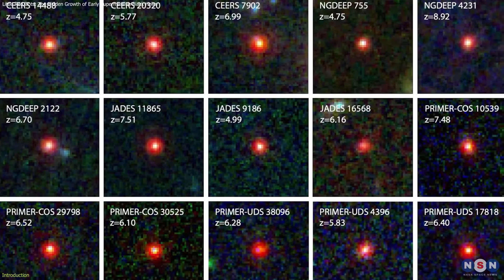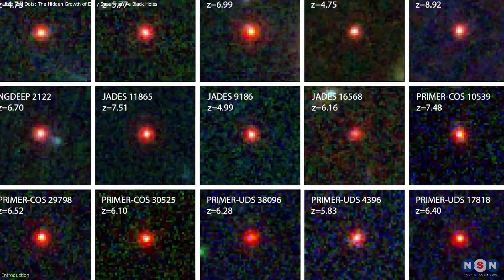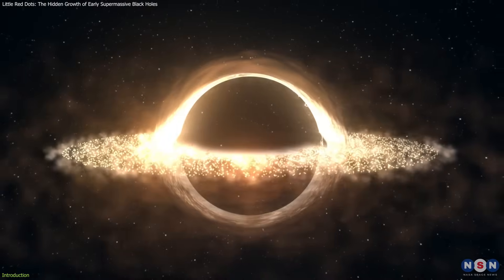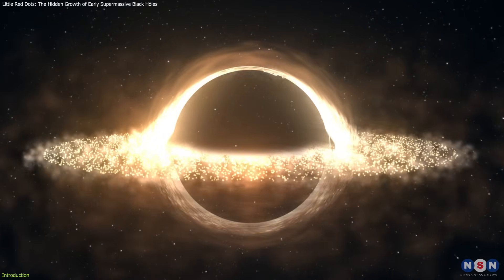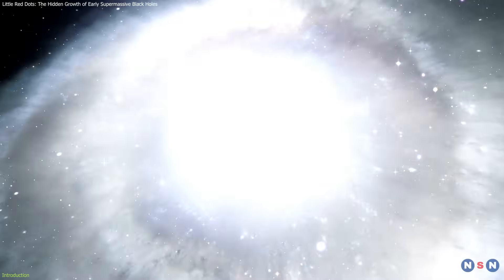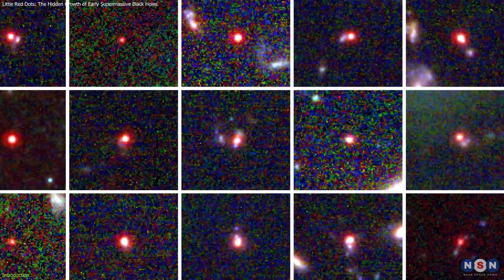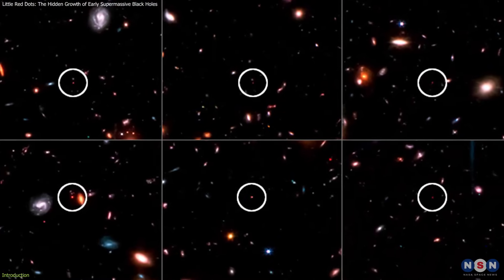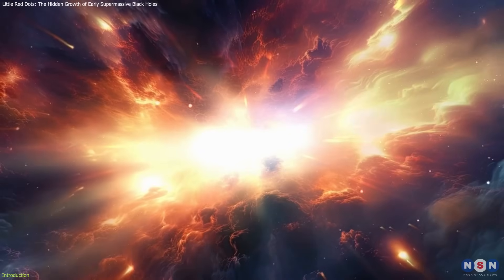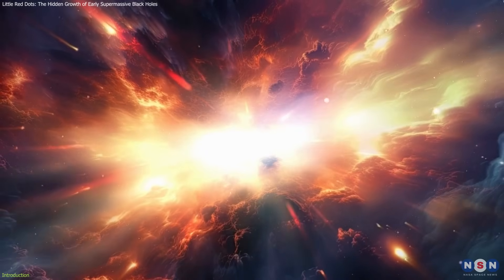These small, highly redshifted objects have sparked curiosity among scientists, revealing unexpected insights into black hole growth and the birth of galaxies. But what exactly are these cosmic specks? Why are they so different from what we expected? And most importantly, what do they tell us about the early universe?